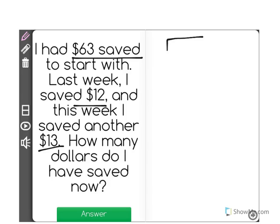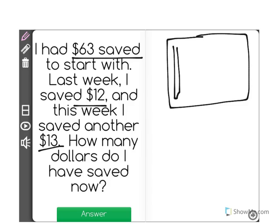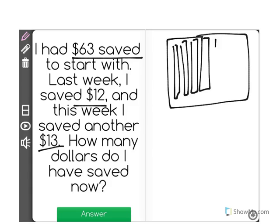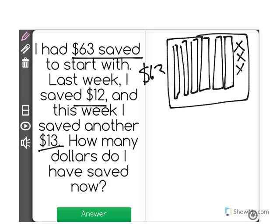Let's picture this. To start with, I had $63 saved. I'm going to use these bars to represent $10: 10, 20, 30, 40, 50, 60. And X's will represent $1: 61, 62, 63. So there's the $63 I had saved to start with.